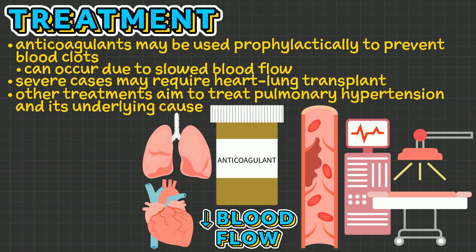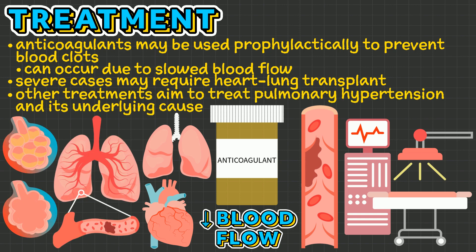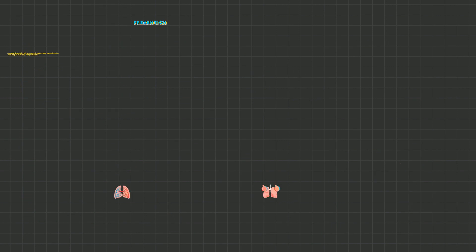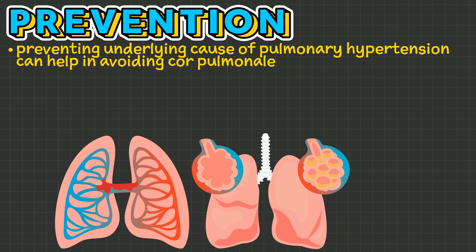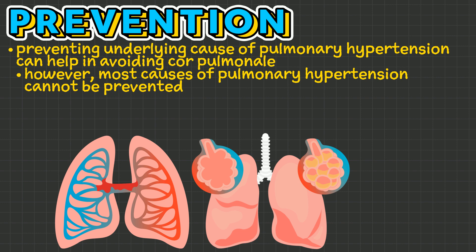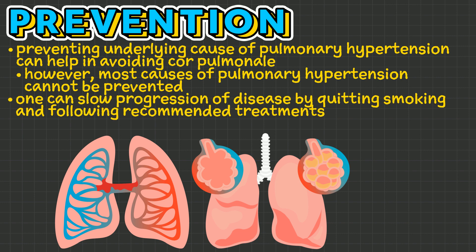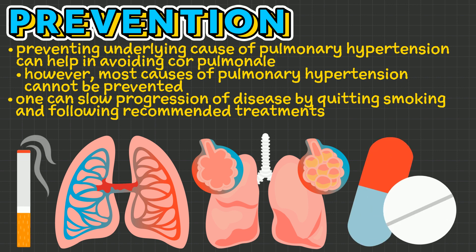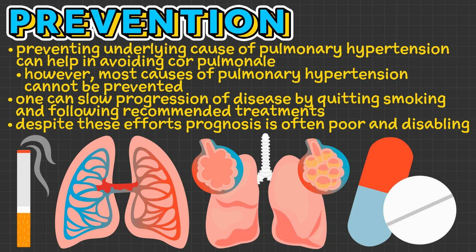Other treatments aim to address pulmonary hypertension and its underlying cause. Preventing the underlying cause of pulmonary hypertension can help in avoiding cor pulmonale. However, most causes cannot be prevented. Nevertheless, one can slow down disease progression by quitting smoking and following recommended treatments. Despite these efforts, the prognosis of cor pulmonale is often poor and disabling.